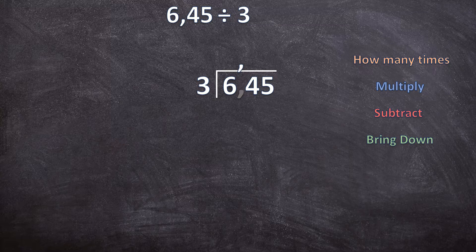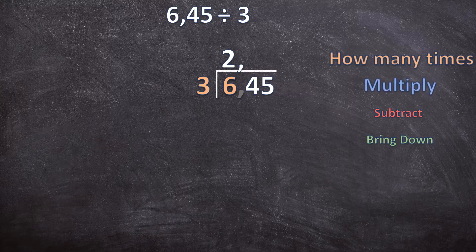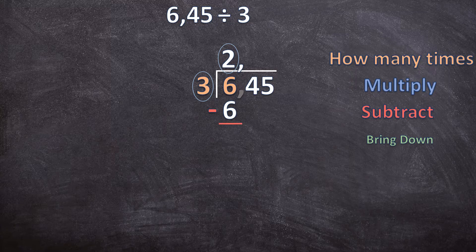Now we can start dividing — the rest is normal long division. The first question is: how many times does three go into six? You can get two threes out of six. Next step, multiply: two times three is six. Now we subtract: six minus six is zero. Now we bring the next digit down — remember we ignore the comma — so we bring the four down.